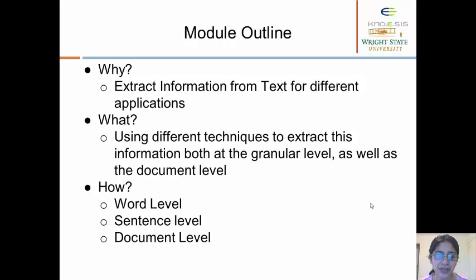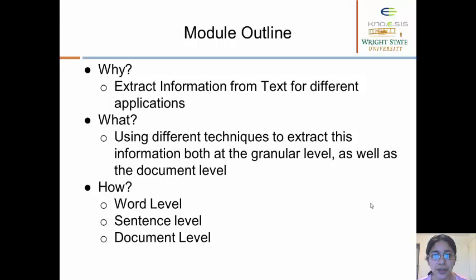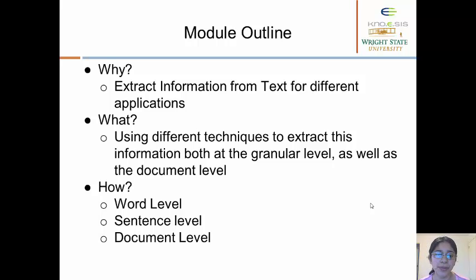So what do we plan to achieve by text mining? Using these, we can extract information from the text both at the document level as well as fine-grained information, as we will see from some of the methods discussed in today's class. So how do we do this? To understand this, we first need to break down the problem into different levels. We can extract information at the word level, at the sentence level, and at the document level.